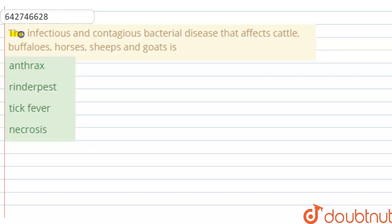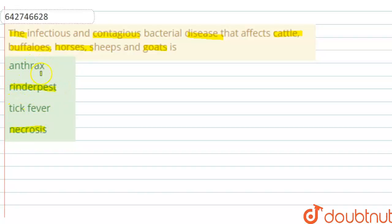The question says that the infectious and contagious bacterial disease that affects cattle, buffaloes, horses, sheep, and goats is — options are: anthrax, rinderpest, tick fever, and necrosis. There are four options given and we have to choose the correct option. The question is asking about an infectious and contagious bacterial disease among these options.